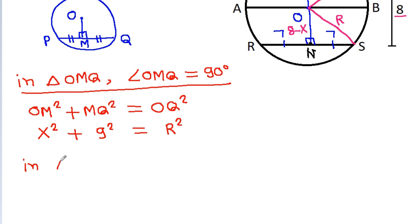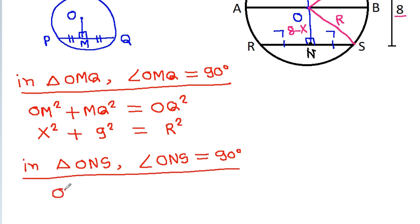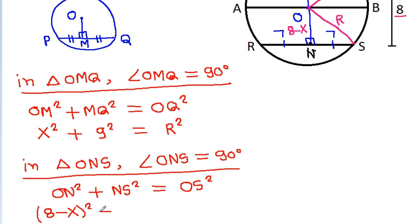And in triangle ONS, angle ONS is 90 degrees. So ON² plus NS² equals OS². That is (8 minus X)² plus 7² equals r², where OS is the radius.